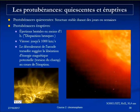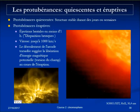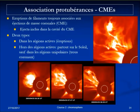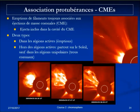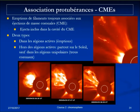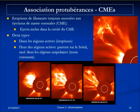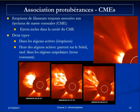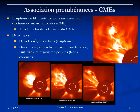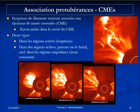In hot coronal lines, prominences can be seen by absorption in silhouette against the bright background. Eruptive filaments are intimately associated with coronal mass ejections. An example shows a sequence of images from a time-lapse movie: a bubble — the CME — escaping, with bright threads of filament material inside the cavity, giving the impression of an expanding arcade with the filament and its flux rope embedded inside the structure.